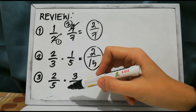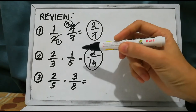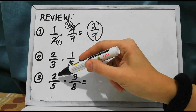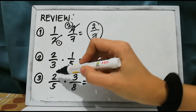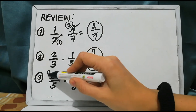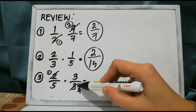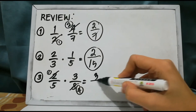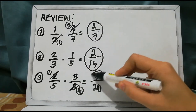Last, we have two fifths times three over eight. We have a common factor: 2 and 8 have a common factor of 2. So 2 divided by 2 is 1, and 8 divided by 2 is 4. Then 1 times 3 is 3, over 5 times 4 is 20.